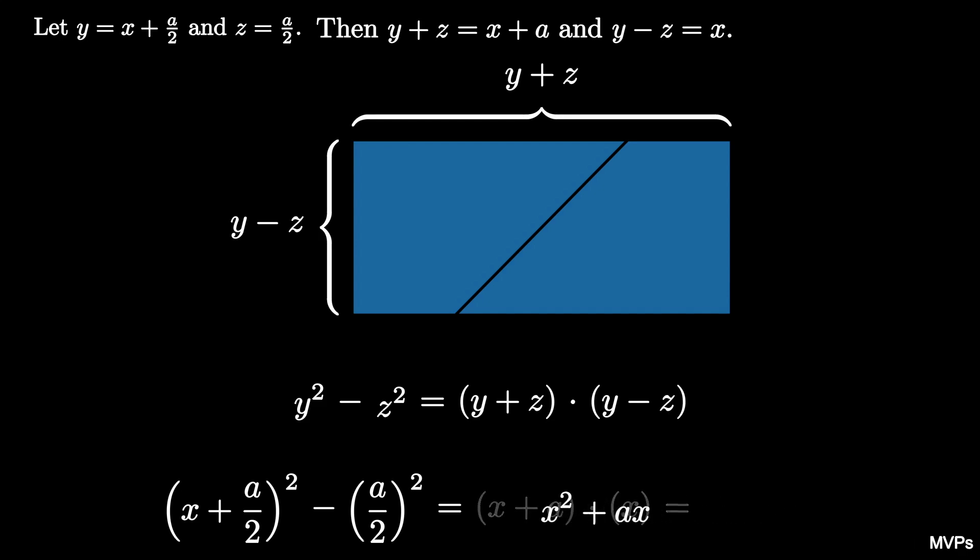Therefore, the quantity x plus a over 2 squared minus a over 2 squared is equal to x squared plus ax. This equation is known as completing the square, and therefore we have used the difference of squares formula to complete the square.